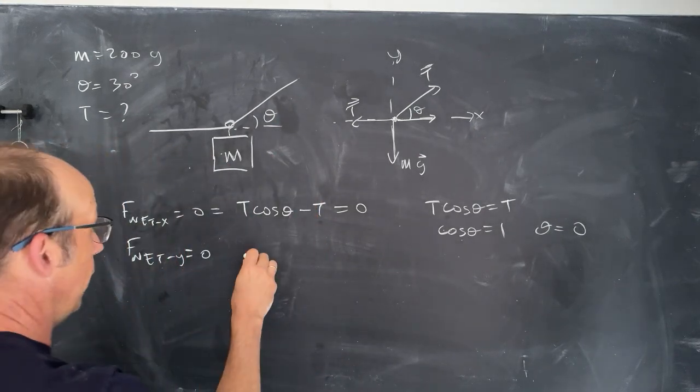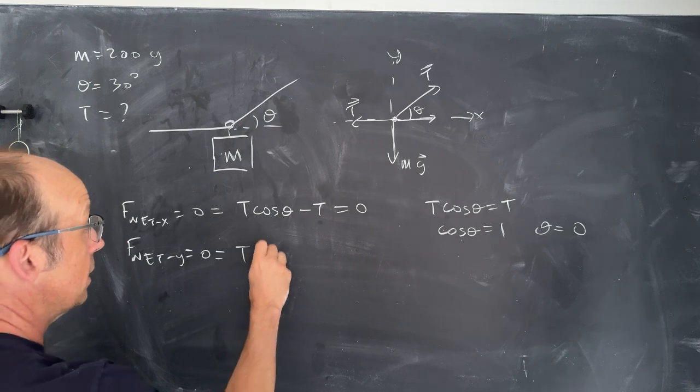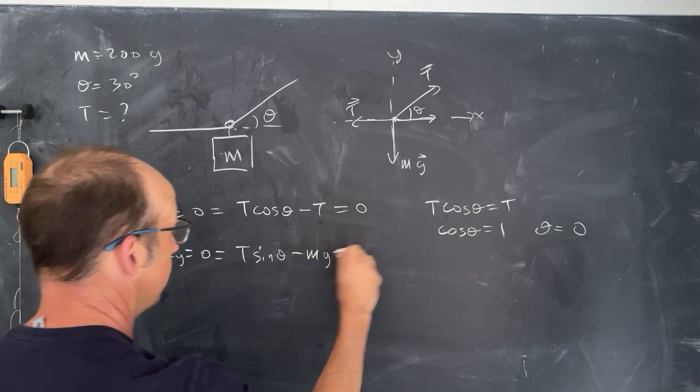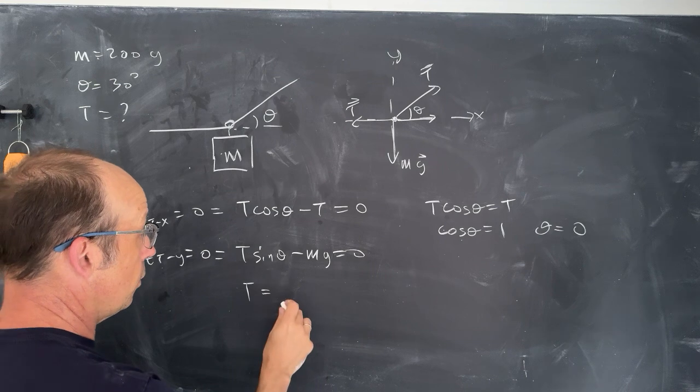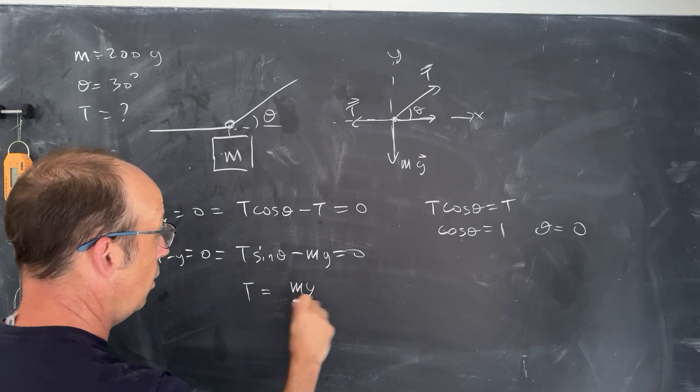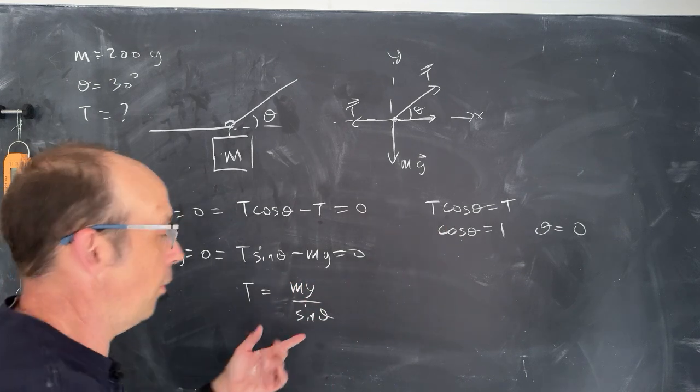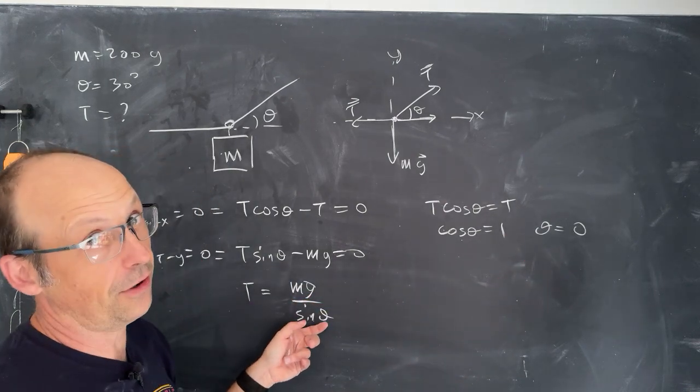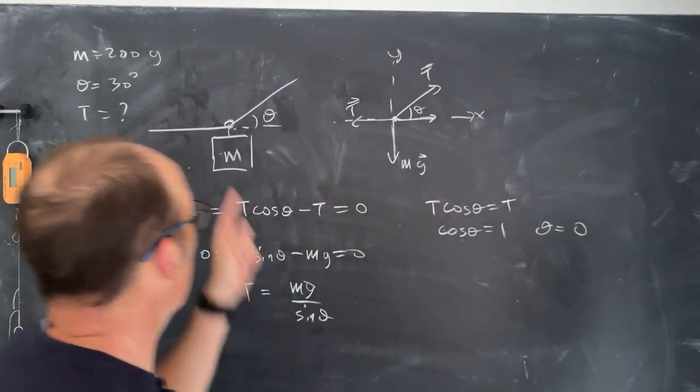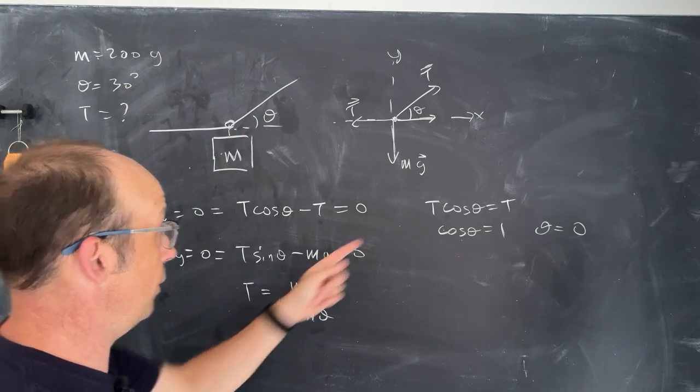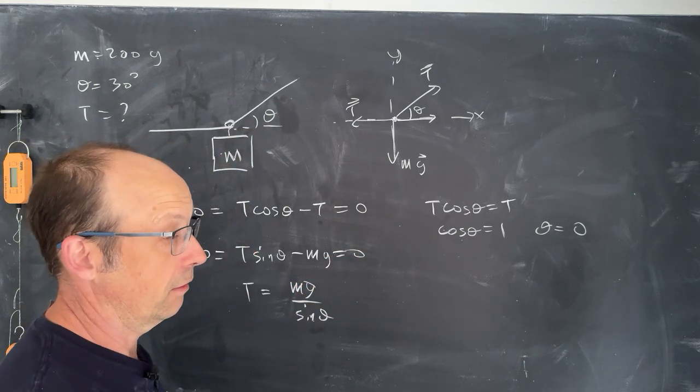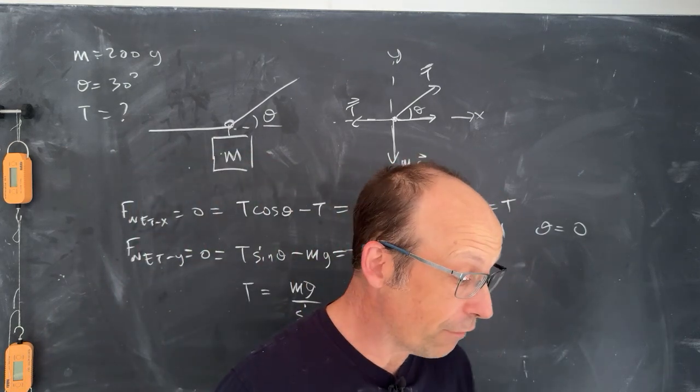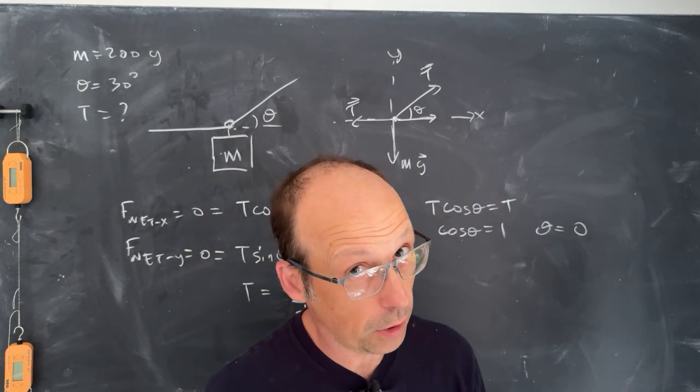Now if we go over to the y direction, I have t sine theta minus mg equals zero. So t equals mg over sine theta. But I mean, what's theta? What am I going to put in for theta? Am I going to put theta to zero? Then I get zero. That's bad. Or I'm going to put it in up there and then I'm going to get a value for t that doesn't agree with the value over there. So it's an impossible problem. Now let me go ahead and show you in real life how it doesn't work.